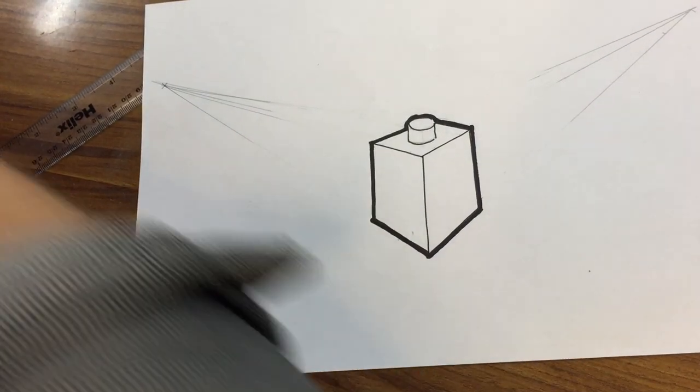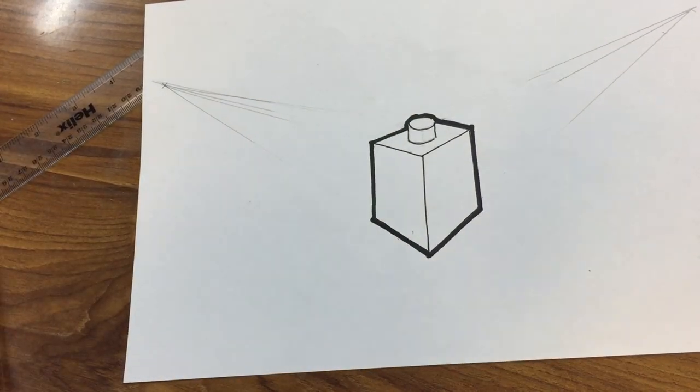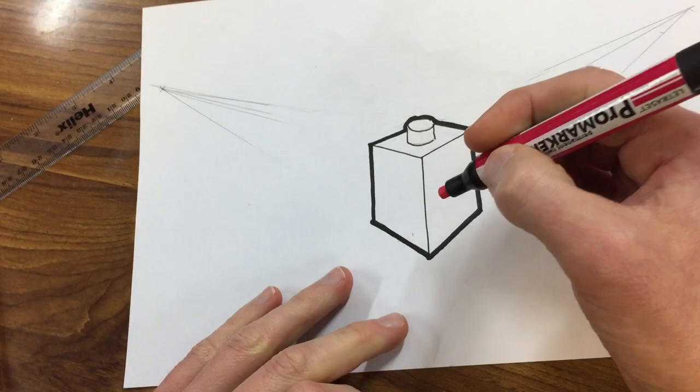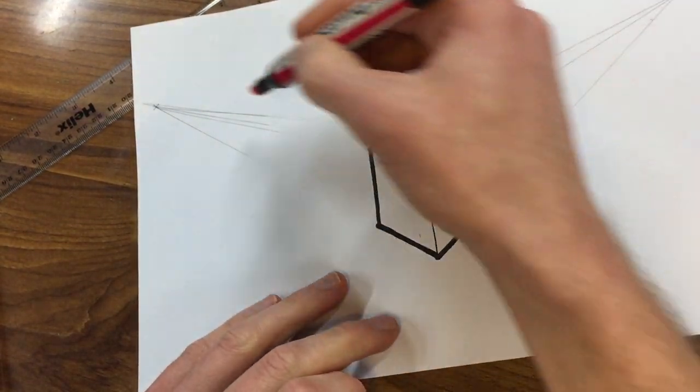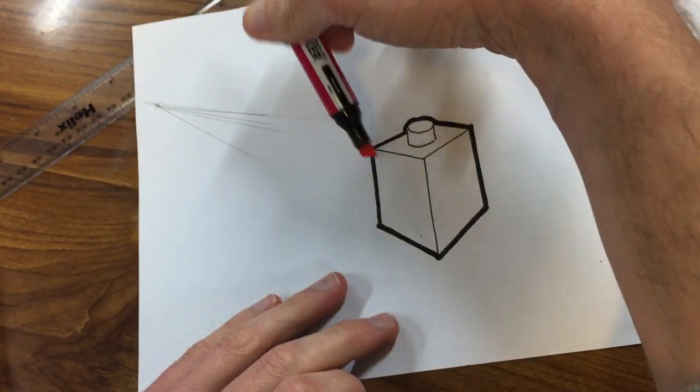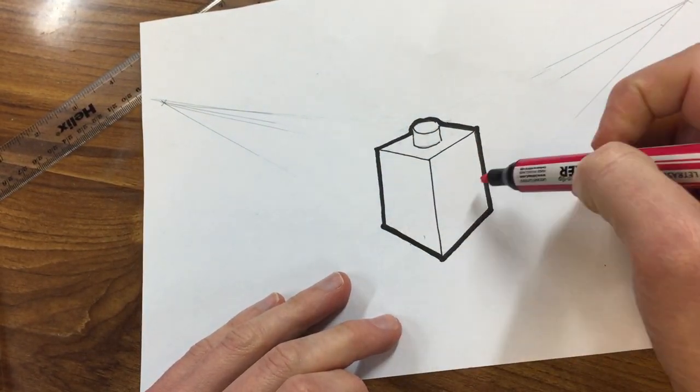You can either color it with coloring pencils, or I'm going to save time by using a graphical pen marker. If you imagine light coming from one direction—if I imagine light coming here, I'd have a light side and a dark side, and the top might be something in between.